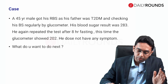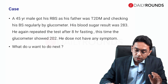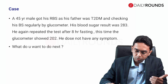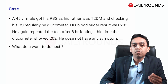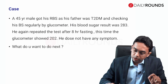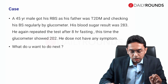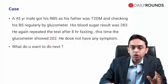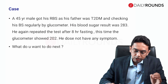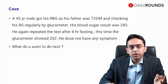We have a 45-year-old male who got his blood sugar checked — a random blood sugar — as his father was diabetic and was checking blood sugar from a glucometer regularly. This 45-year-old male also got his blood sugar checked at the same time and it came out to be 283. He again repeated after 8 hours of fasting, as recommended, and this time it came to be 202. He does not have any symptom.